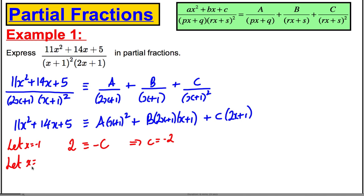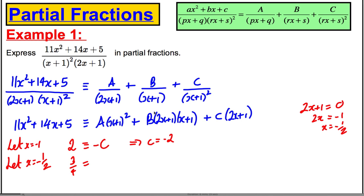If we let x be negative one half, because I want to make the (2x + 1) bracket zero: substituting negative one half gives three quarters on the left. The B and C terms disappear. Negative one half plus one is one half, and one half squared is one quarter. So I get one quarter times A. Therefore, multiplying by four, A must equal three.